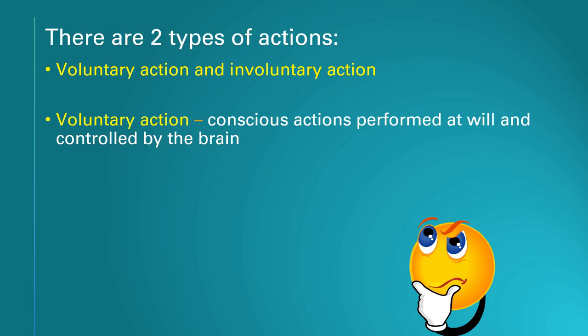Performed at will means we can choose whether we want to do it or not, and it is controlled by the brain. Examples of voluntary action include talking, writing, walking, running, and picking up a coin from the floor. You can choose to do it or not, and you can choose whether to do it fast or slow.